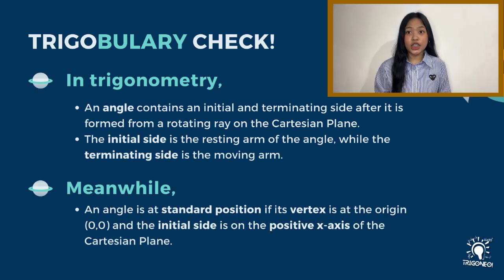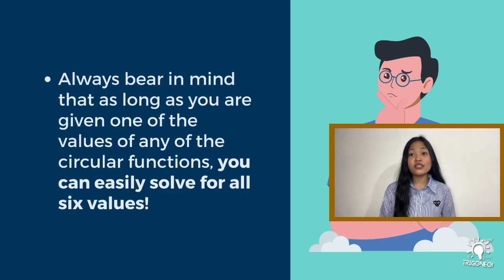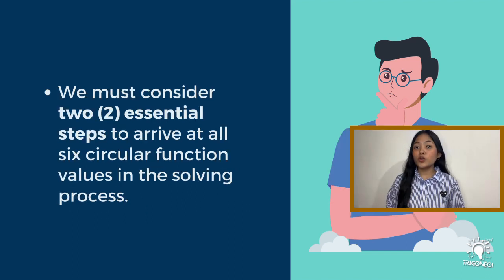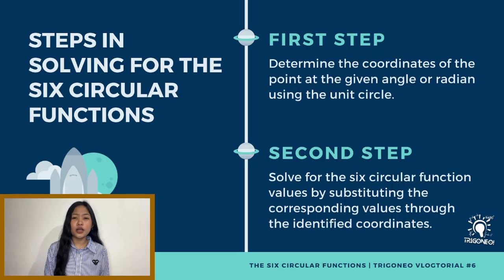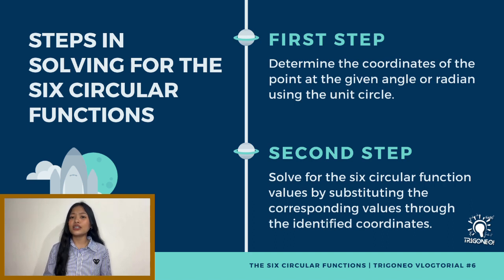Are we now clear on the definition of the six circular functions? Excellent! Let us now proceed to the steps on how to solve for the six circular function values of a given angle or radian. Always bear in mind that as long as you are given any of the values of the circular functions, you can easily solve for all six values. The first step is to determine the coordinates of the point at a given angle or radian using the unit circle. Once done, you can then solve for the six circular function values by substituting the corresponding values through the identified coordinates. To delve into examples, applications, and real-world scenarios, let's hear more from Christian, one of our Trigo Neo instructors.